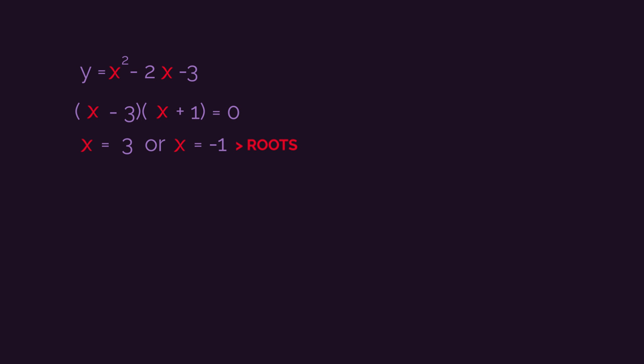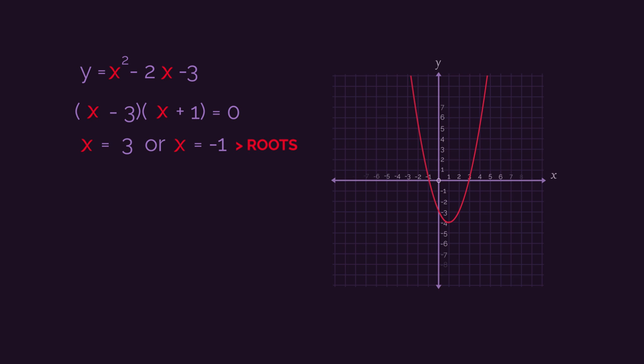What do you notice about the roots when factorised, and where the graph crosses the x-axis?